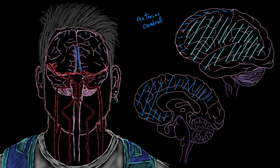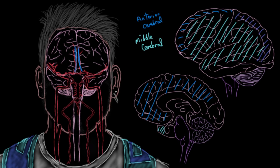You won't see much middle cerebral artery supply on the medial part of your brain, except maybe a little spillover at the edge of the temporal lobe. The posterior cerebral artery does the rest of the lateral aspect of the cerebrum: some of the parietal lobe, most of the occipital lobe, and a fair chunk of the temporal lobe.